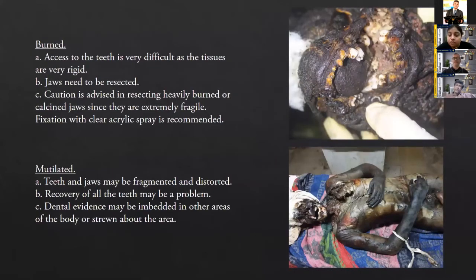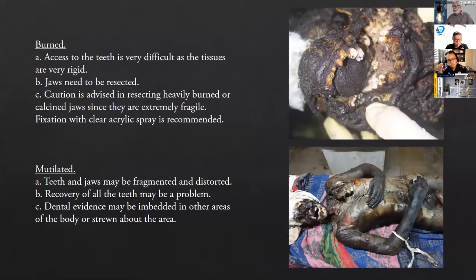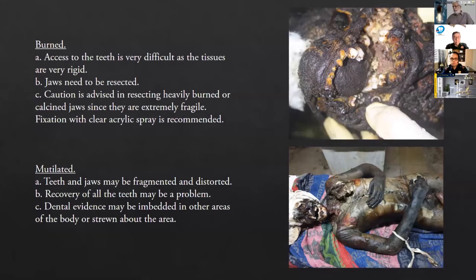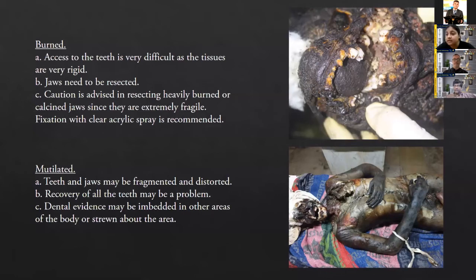For burnt remains, access to teeth becomes very difficult as the teeth become very fragile due to high temperatures. The jaw may need to be resected. Caution is advised in resecting heavily burnt or calcined jaws since they are extremely fragile — fixation with clear acrylic spray is recommended to stabilize remains before performing any procedure. For mutilated remains, teeth and jaws may be fragmented and distorted. Recovery of all teeth may be a problem, as dental evidence may be embedded in other areas of the body. A full body radiograph may reveal any ingested dental remains.